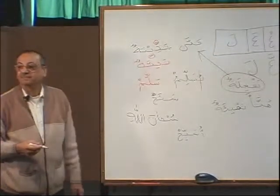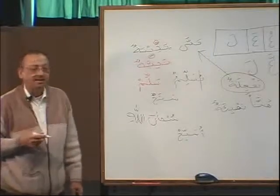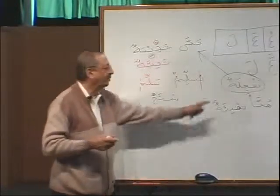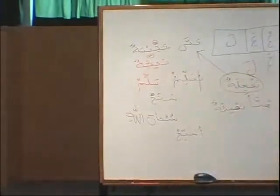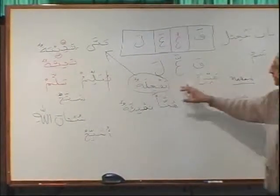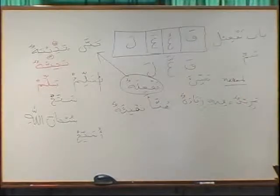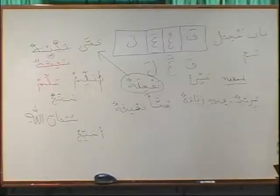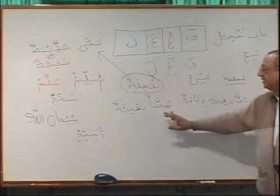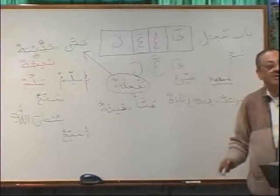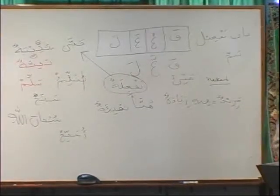Remember how tahiyyatun came into being — it was originally tah-yi-ya-tun. The pattern is tafa'ilatun. When will you use this pattern? If the verb is nakis, or mahmuz al-lam — when hamza comes at the end, like hanna. Normal is tafa'ilun, but if it is nakis or mahmuz al-lam, then it becomes tafa'ilatun.